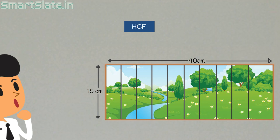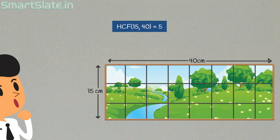The highest number which can divide both height and width. Here, the HCF of 15 and 40 is 5. Hence, if you want a bigger gap between grill bars, you can place them 5 cm apart.